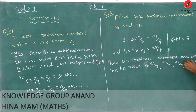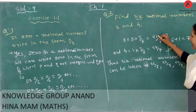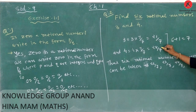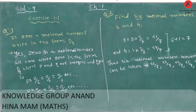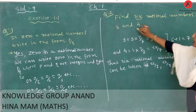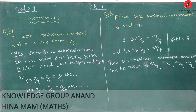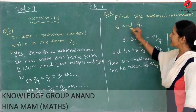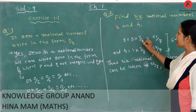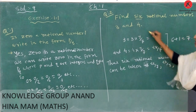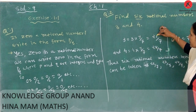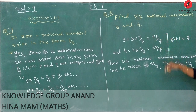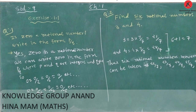Thus, 6 rational numbers between 3 and 4 can be written as: 22 by 7, 23 by 7, 24 by 7, 25 by 7, 26 by 7, and 27 by 7.